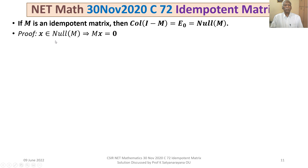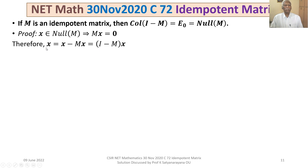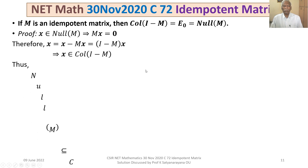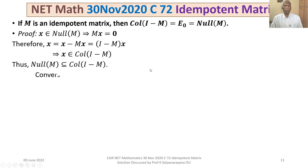Proof: If x belongs to the null space of M, then Mx = 0. Therefore x = x − Mx = (I − M)x. So (I − M)x = x, meaning x belongs to the column space of (I − M). Hence null(M) is contained in col(I − M).